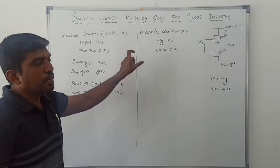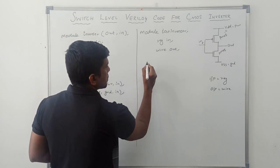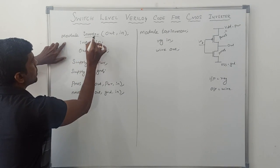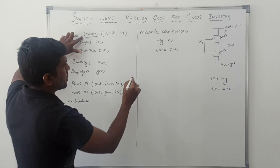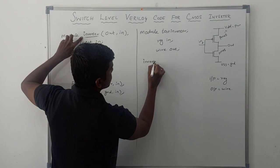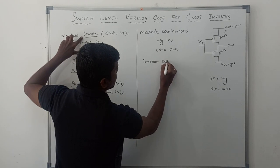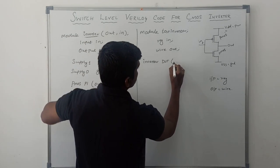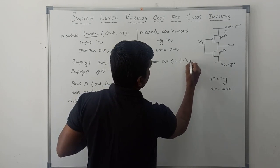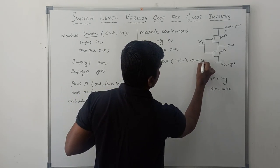After that, declaration of instantiations. In this Verilog HDL code, the module name is inverter. This module name is reflected here. Inverter, then device under test, then dot in, in comma, dot out, out.